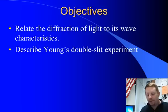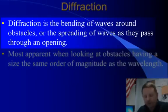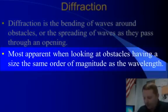Objectives for today will be relating the diffraction of light to its wave characteristics and describing Young's double slit experiment. So to begin with, diffraction is the bending of waves around obstacles, or the spreading of waves as they pass through an opening. And it's most apparent when looking at obstacles having a size in the same order of magnitude as the wavelength.